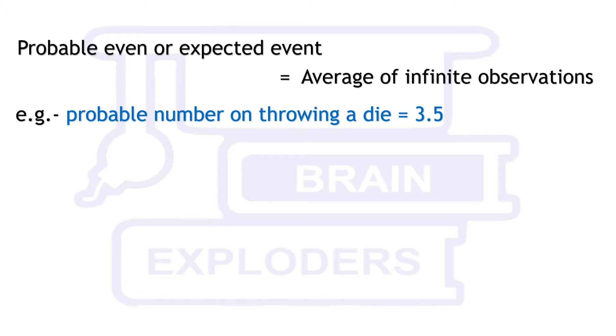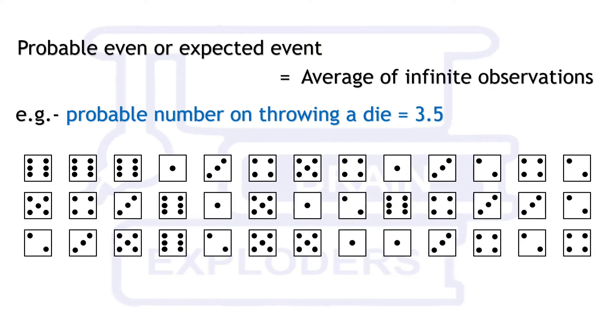Suppose we get 6 on throwing a die and we get 2 sixes again in the same row. This is included in the example to show that patterns do not affect the probable event. After this 1, 3, 4, 5 and other numbers occur randomly.